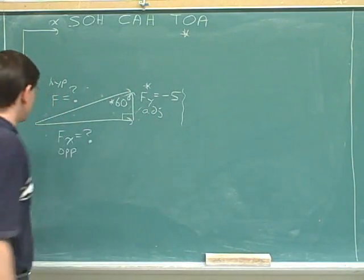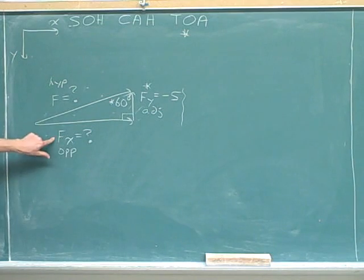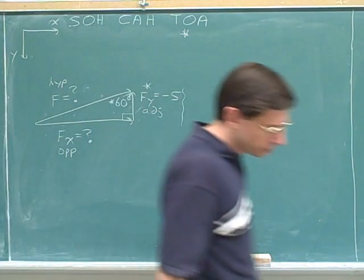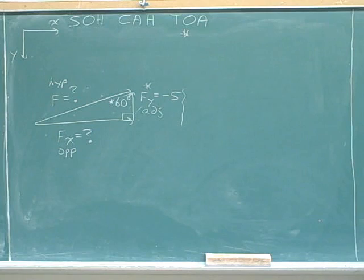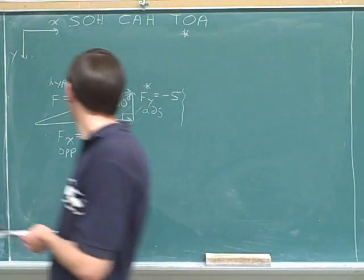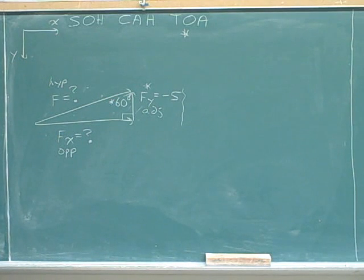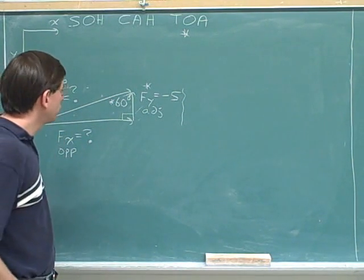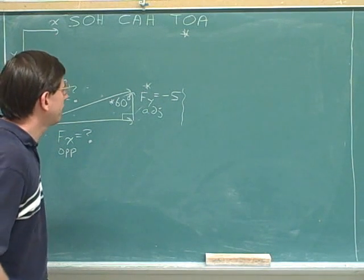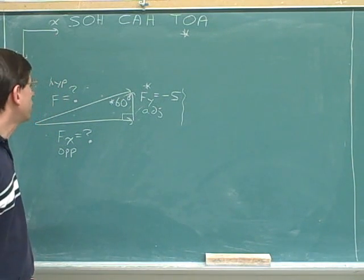We've got to find the overall vector and we've got to find the x component, and we can do those in whichever order we like. We can attack these in whichever order we like. Now, which trig functions should we use here?